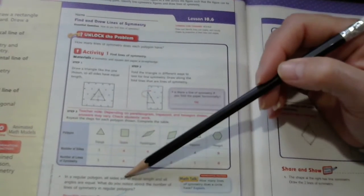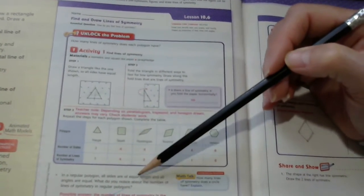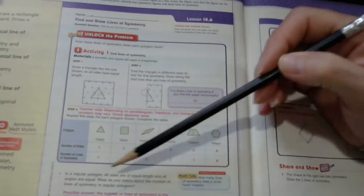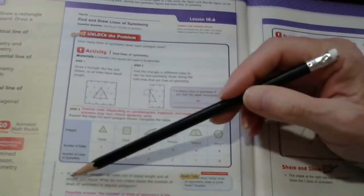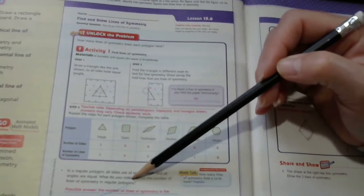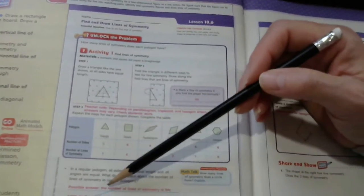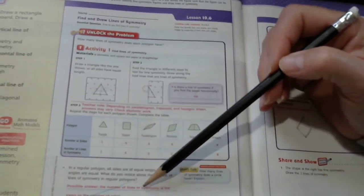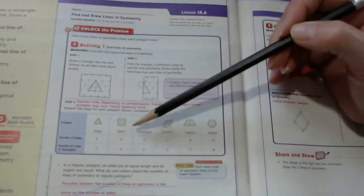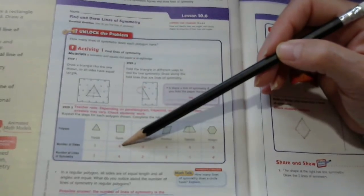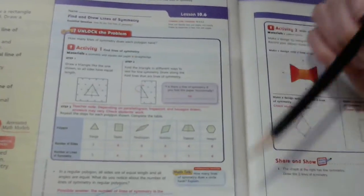In a regular polygon, all sides are of equal length, and all angles are equal. What do you notice about the number of lines of symmetry in regular polygons? Well, our possible answer is the number of lines of symmetry is the same as the number of lines of sides. For instance, with a square, it's four sides and four lines of symmetry.